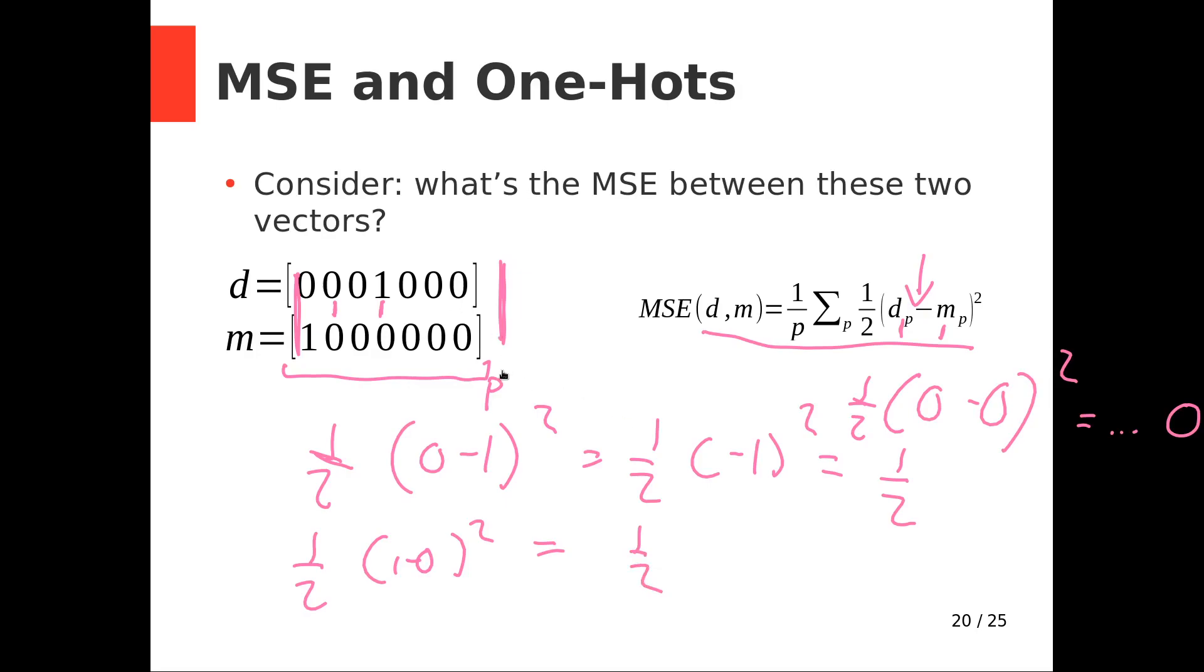So what is our total? The one half that represents the first one plus the one half for the second one divided by one over P, where P here is one, two, three, seven. So one half plus one half is one, so our loss ends up being a seventh.